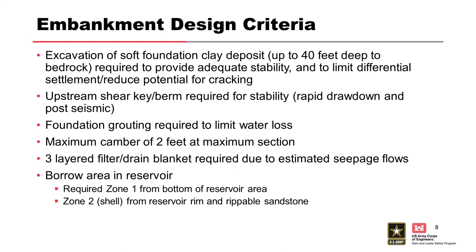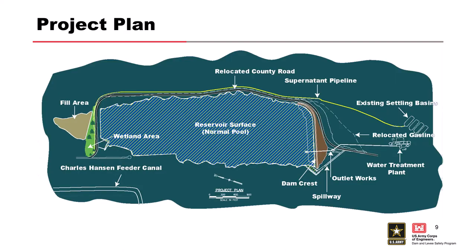Partway through design, it was determined there was only a 20% margin on the borrow area for shell material using the original configuration. Additional evaluations found that the sandstone was actually rippable. The contract documents specified that up to about 100,000 yards of rippable sandstone could be processed and used in the shell material. They ultimately used about 75,000 yards, which is how the site material balance was achieved.